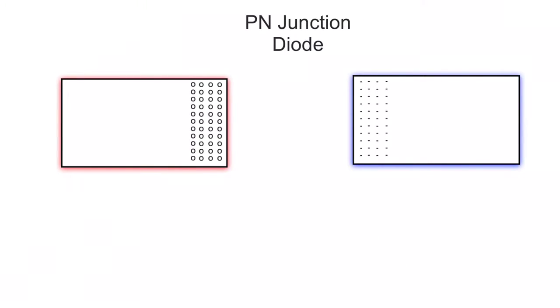In our last video, we talked about p-type semiconductors and n-type semiconductors. So we have the p-type, which is this guy right here. It has an excess of holes, so it has a positive charge. On this side, we have the n-type semiconductor. It's got an excess of electrons, so it's got a negative charge.